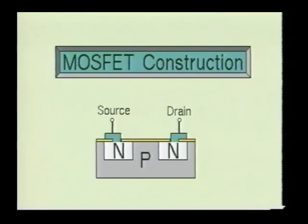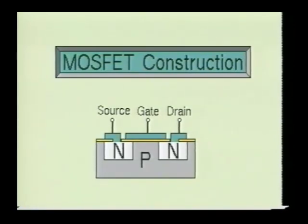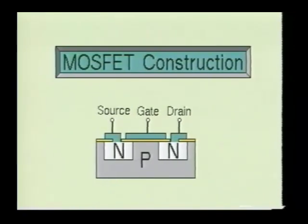Next, metal is deposited through the holes to form the drain and source terminals. Then a metal plate is deposited on the silicon oxide between the drain and source terminals; this plate will become the gate of the MOSFET. The silicon oxide is used as an insulator, so the gate will become insulated from the channel of the MOSFET. In our example, we used a P-type substrate with N-type blocks.